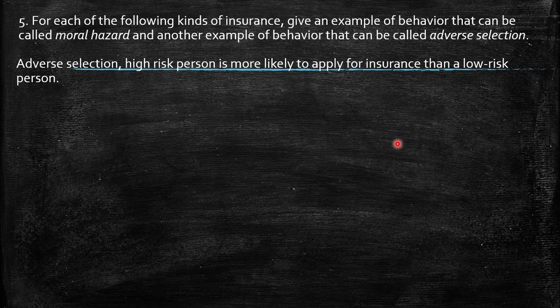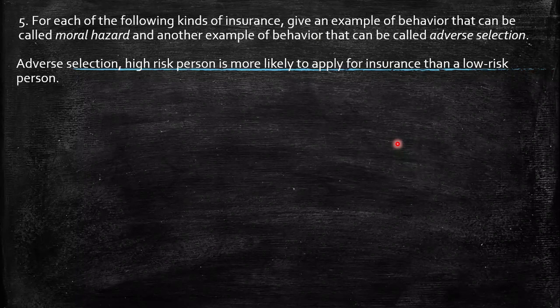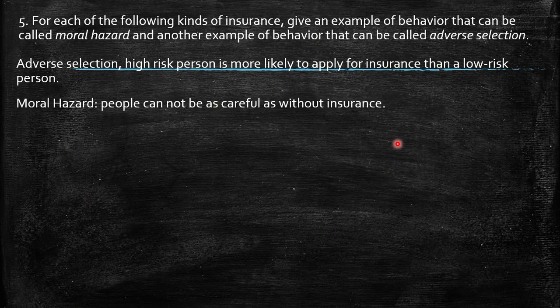Adverse selection is a problem derived from asymmetric information. Basically, a high-risk person is more likely to apply for insurance than a low-risk person, meaning the insurance company doesn't have the full knowledge that the other party has. Moral hazard is when you don't act as usual, because people tend to be not as careful when they have insurance.